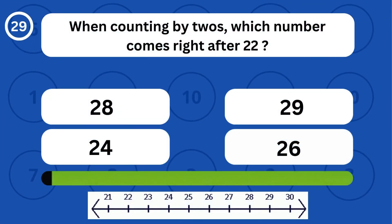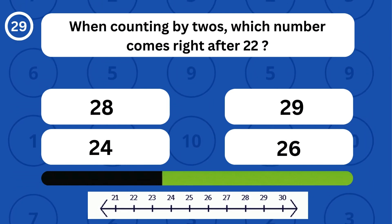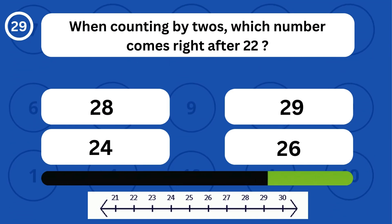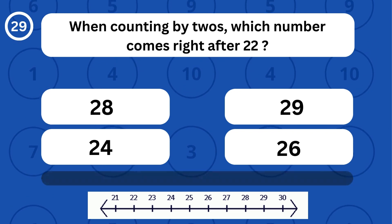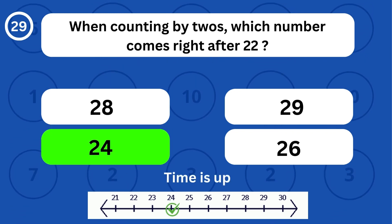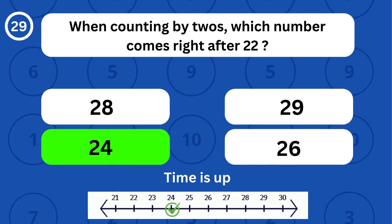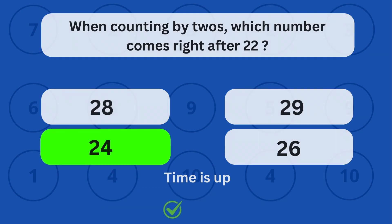When counting by twos, which number comes right after 22? When counting by twos, the number 24 comes right after 22.